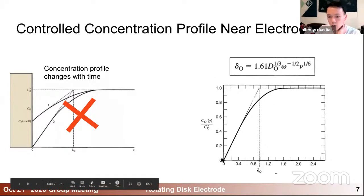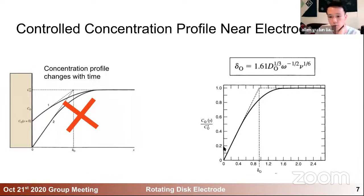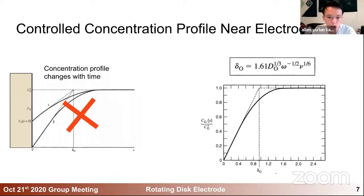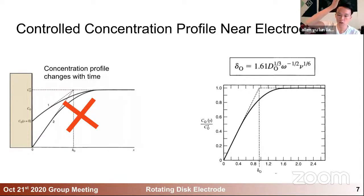Near the surface, you will still have a lower concentration of your active species — maybe down to zero, maybe close to a fraction of the bulk concentration — depending on how fast the reaction is happening at the electrode surface. You might wonder: since rotating faster gives a thinner diffusion thickness, what happens if you just keep rotating faster and faster? Will the concentration profile just approach a delta function near the surface?